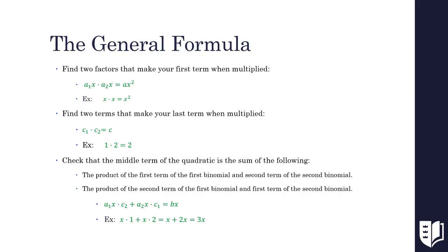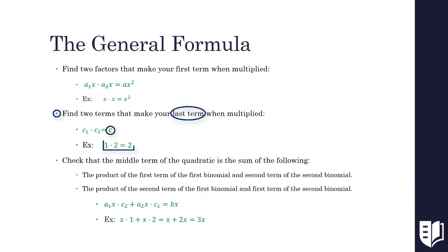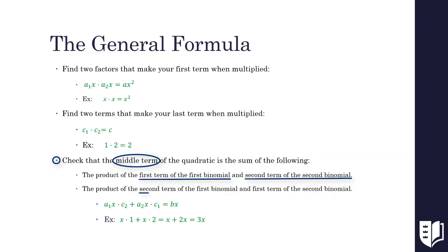In order to find the first term of each of our binomials, we need to find two factors that make the first term of our quadratic ax squared when multiplied. In our example, x times x equals x squared. In order to find the last term of each of our binomials, we need to find two factors that make the last term of our quadratic, which is c, when multiplied. 1 times 2 equals 2, which is c in our example. We also need to make sure that our middle term is the sum of: the first term of the first binomial multiplied by the second term of the second binomial, and the second term of the first binomial multiplied by the first term of the second binomial. In our example, x times 1 added to x times 2 is equal to 3x, which is our middle term.